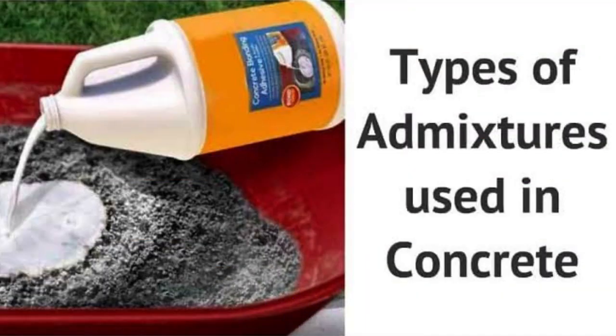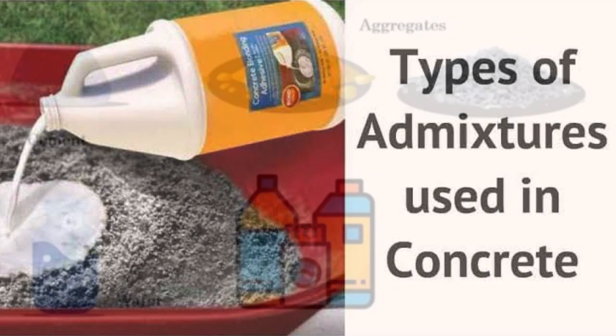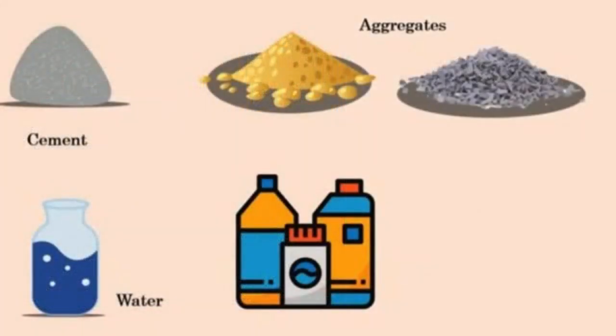Question 3: What is admixture? Chemical admixtures are the ingredients in concrete, other than cement, water, and aggregates, that are added to the mix immediately before or during mixing.